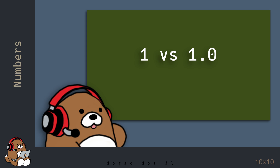You may think that a number is just a number, but in the coding world, the number 1 is different than the number 1.0. Even though 1 and 1.0 have the same value, to your computer, 1 and 1.0 are two different types of numbers.